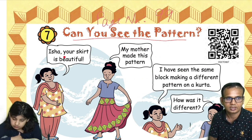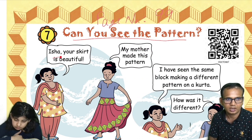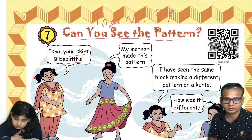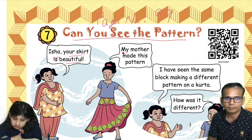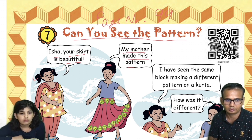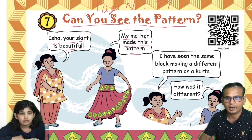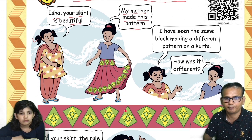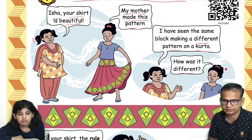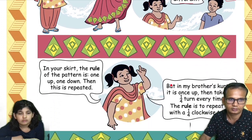Can you see the pattern, Isha? Your skirt is beautiful — this girl is saying to Isha. Then Isha says, my mother made this pattern. Okay, I have seen the block making a different pattern on a kurta. How was it different? She's asking. Then let us see.